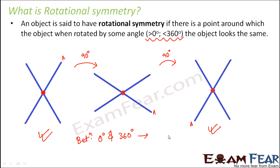Between 0 degrees and 360 degrees, how many identical positions do we see? This is one position and this is another position - so we see two identical positions.